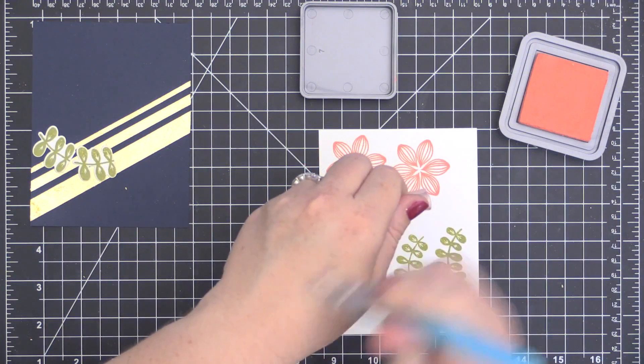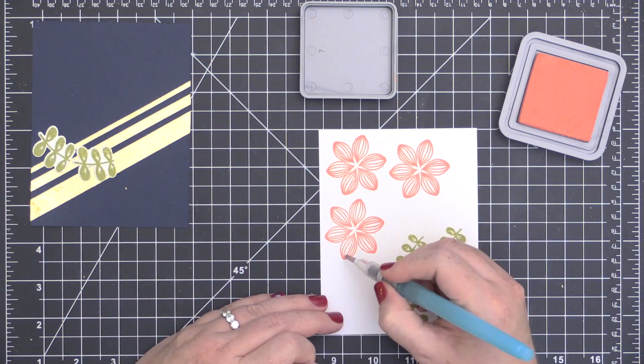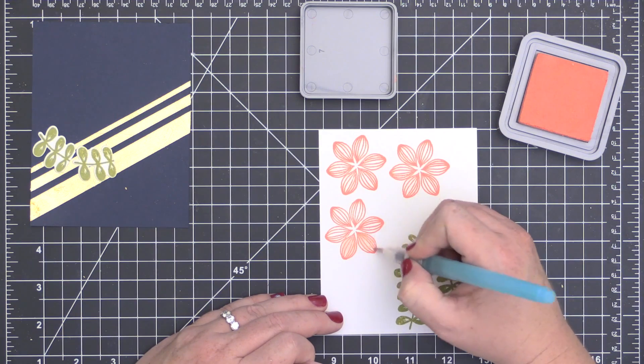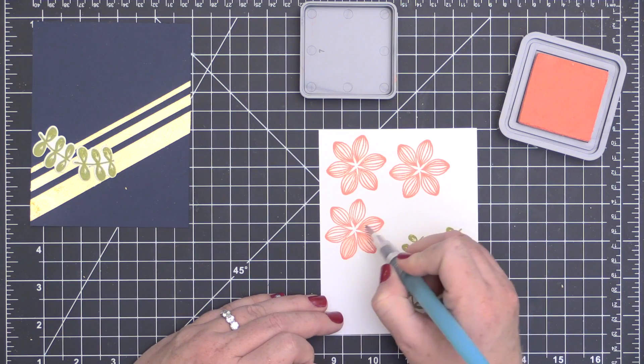Once I get these stamped, I actually wanted to pull some of that color into the center of the flower so it wasn't quite so white. I'm just taking a water brush here and going over those petals with just a little bit of a damp brush.